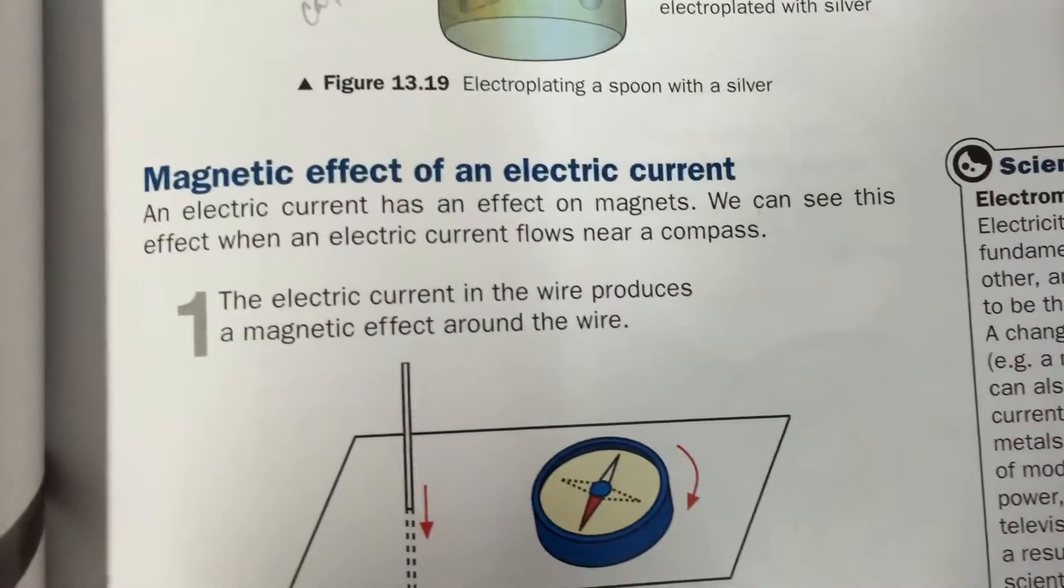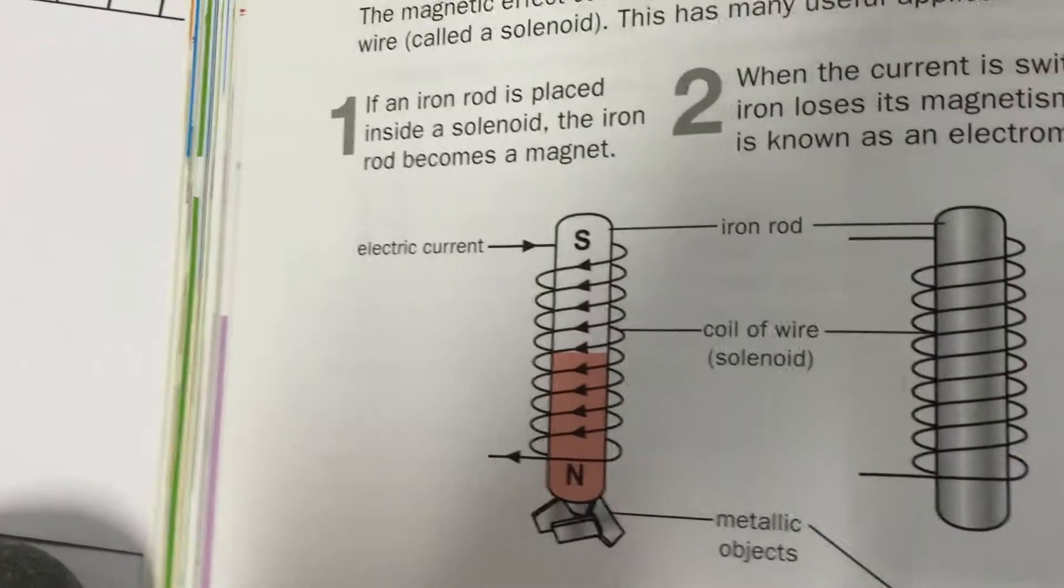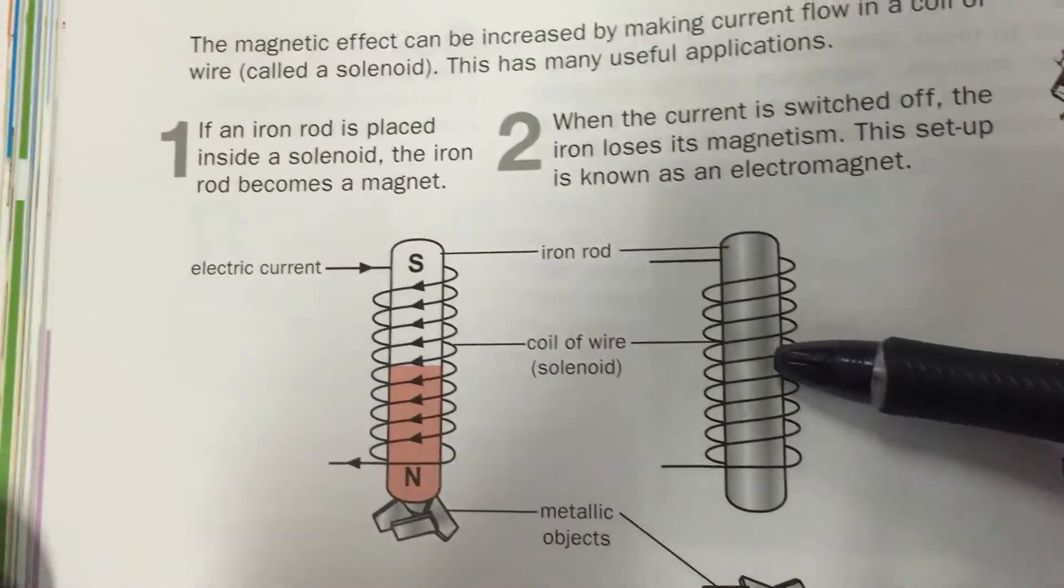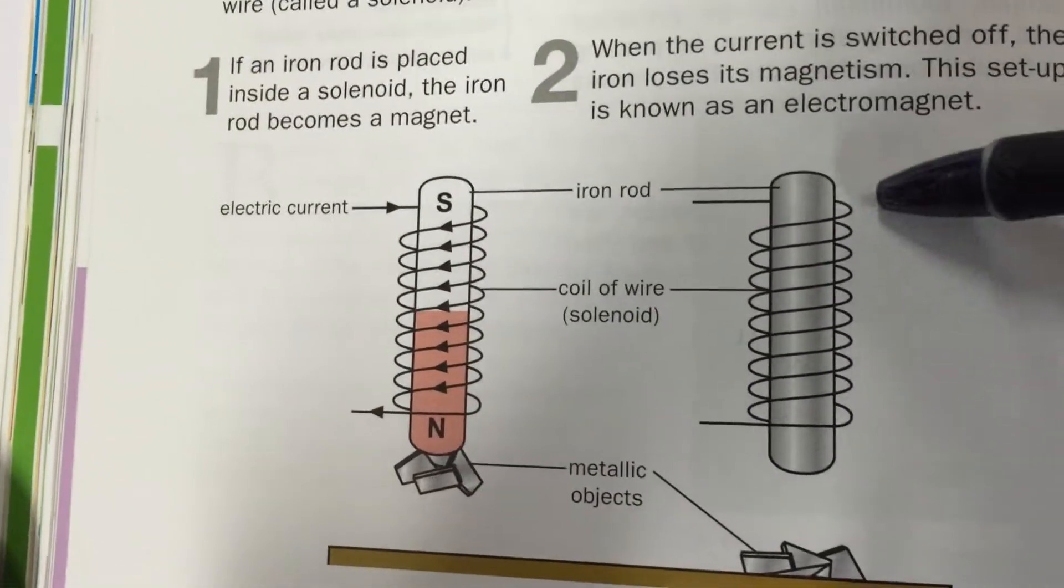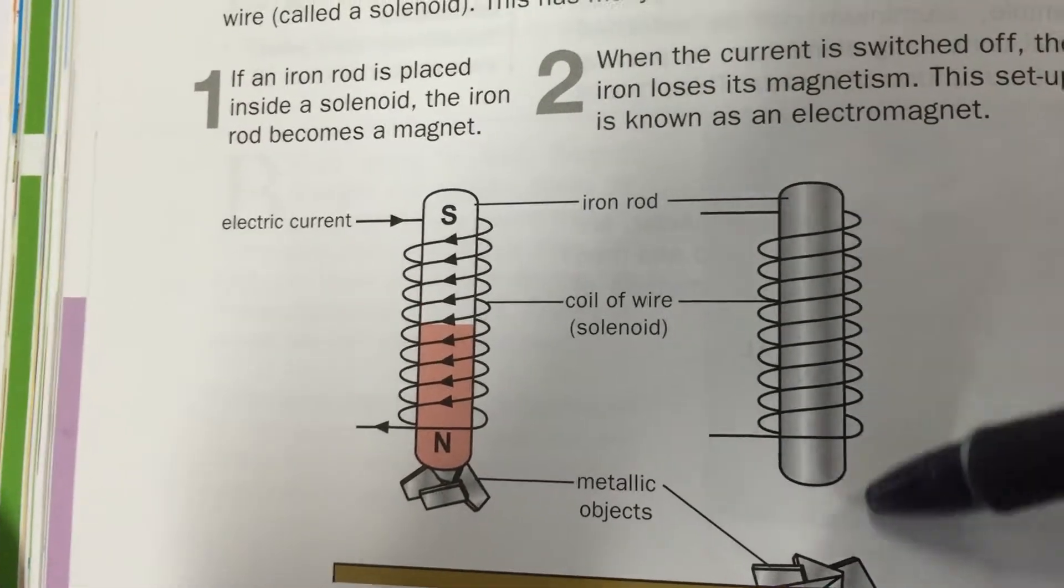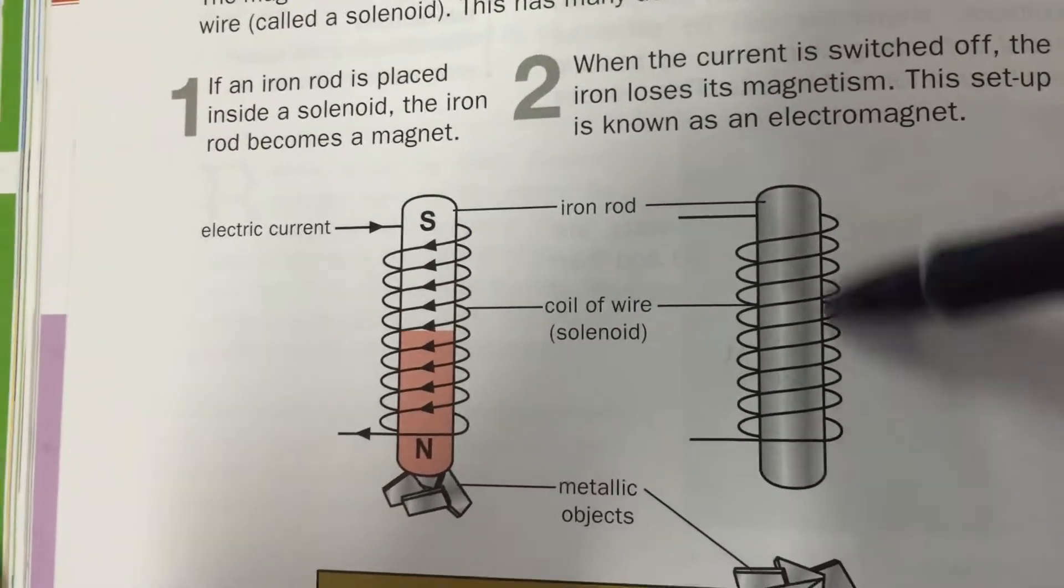Now the thing you need to talk about is the magnetic effect of an electric current. There are three ways to increase the magnetic effect of electric current here. One way is to increase the number of turns of coil. Please note there's only one coil, but there are many turns of coil here.